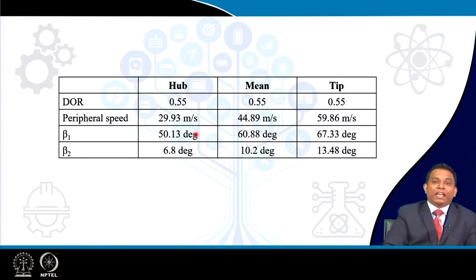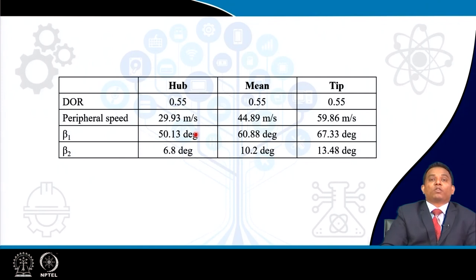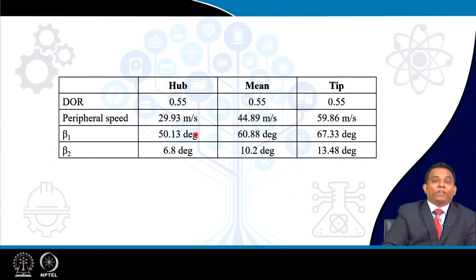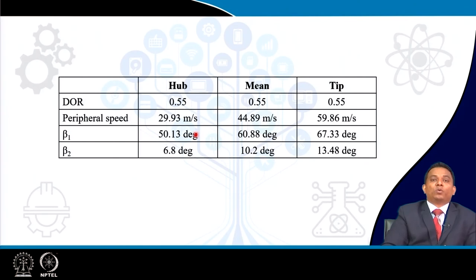In the next session for week 3, we will discuss concepts for designing and the meaning of degree of reaction being constant at a particular station. This example shows how velocity triangles are used and how degree of reaction allows reverse calculation of blade angles.